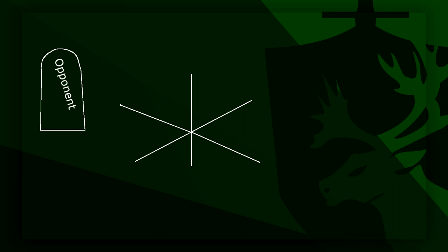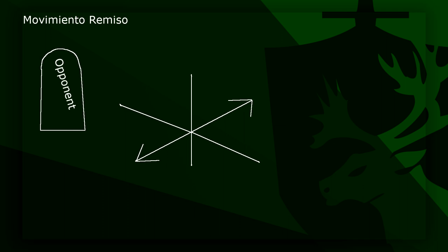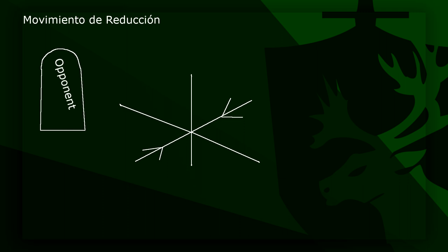Here is the point it differs from vectors on a Cartesian coordinate system. Motion away from the center is called Movimiento Remiso, which is hard to translate but something along the lines of offline movement. Motion back towards the center is called Movimiento de Reducción, which means reductive movement.